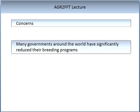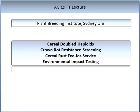If you go into Google you will be able to find the Plant Breeding Institute at Sydney University. This gives you an example of some plant breeding technologies such as cereal double haploids, crown rot resistance screening, cereal rust, fee for service, and environmental impact testing. We will not cover these techniques in any detail in this subject, but it is there for your reference in the future if you need it.